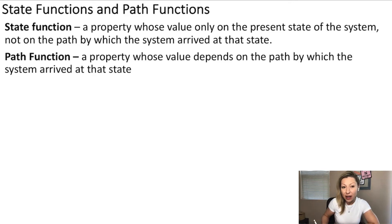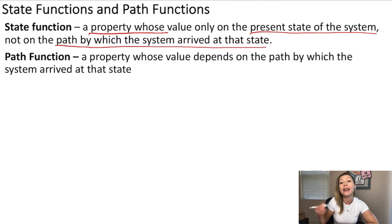So, a state function is simply a property whose value only depends on the present state of the system, and it does not depend on the path by which the system arrived at that state. On the contrary, a path function is a property whose value depends on the path by which the system arrived to that state.